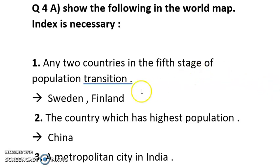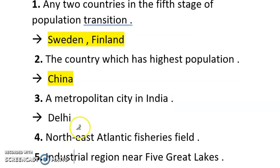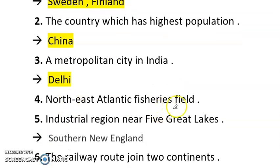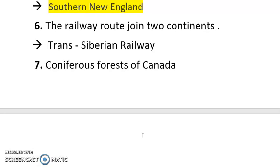Next question: any two countries with the fifth stage of population transition. Switzerland, Finland, Sweden, and New Zealand are in the fifth stage — you can take any of those countries. Then the country with the highest population — that is China. Then a metropolitan city in India — that is Delhi. Next is Northeast Atlantic fishery field. Industrial region near the five great lakes — this is also asked many times in board examinations — the answer is Southern New England. Then the railway route that joins two continents — a very important question — that is the Trans-Siberian Railway.